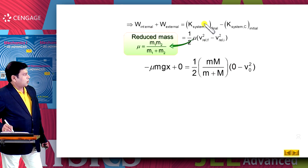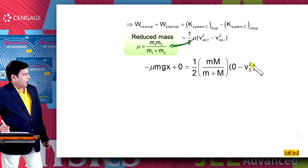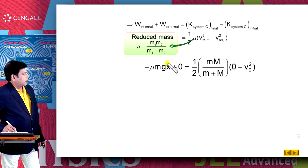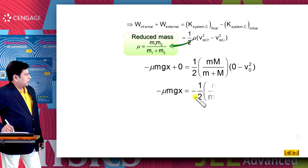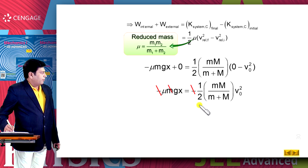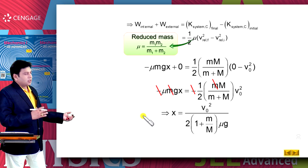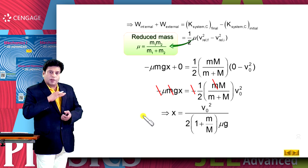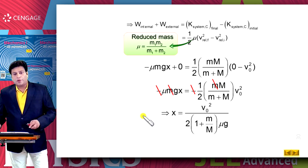We can now substitute this internal work done into the work-energy equation. Using the initial and final relative velocities, after rearranging and cancelling terms, x equals the relative separation between the block and trolley — giving us the minimum relative sliding distance.